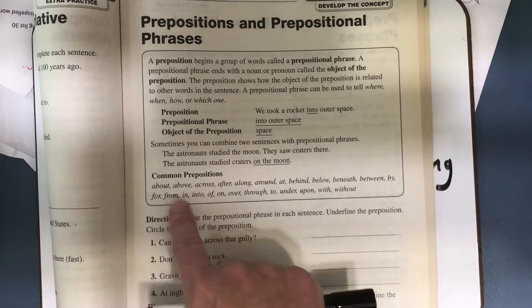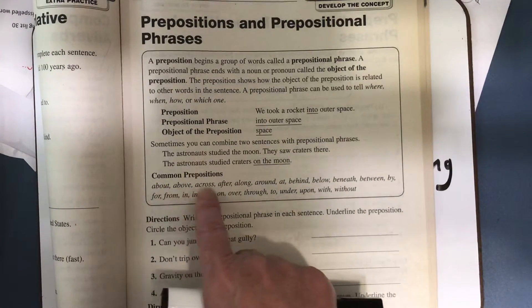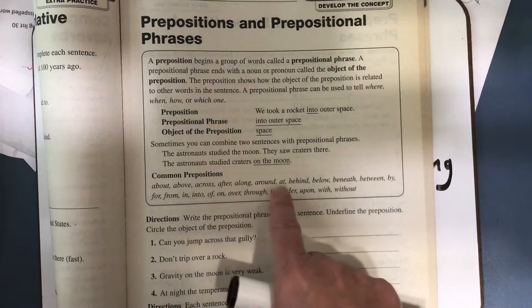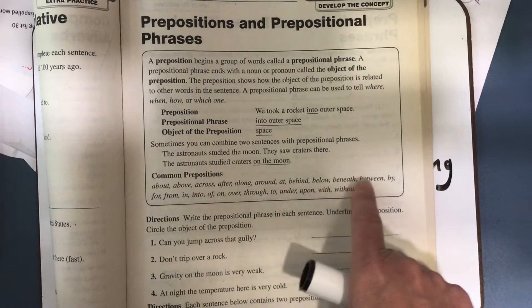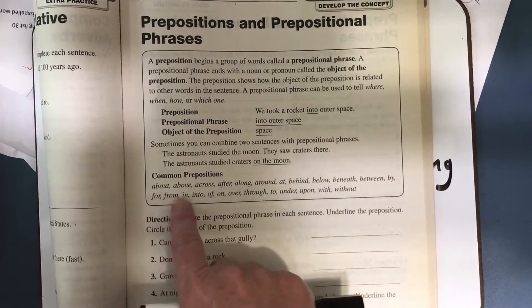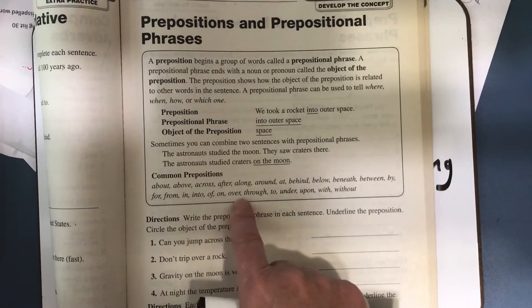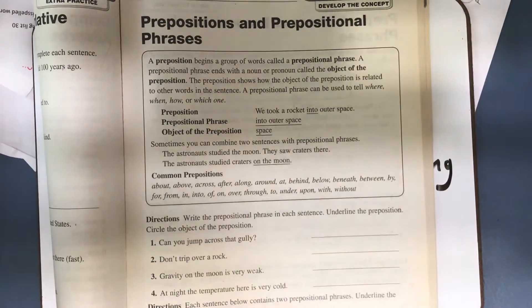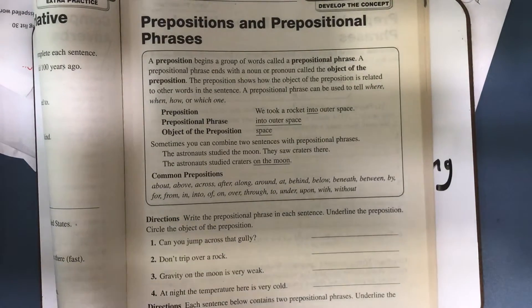And here's a whole list of common prepositions: about, above, across, after, along, around, at, behind, below, beneath, between, by, for, from, in, into, of, on, over, through, to, under, upon, with, and without. This is not the entire list of prepositions, but it is some very common ones.